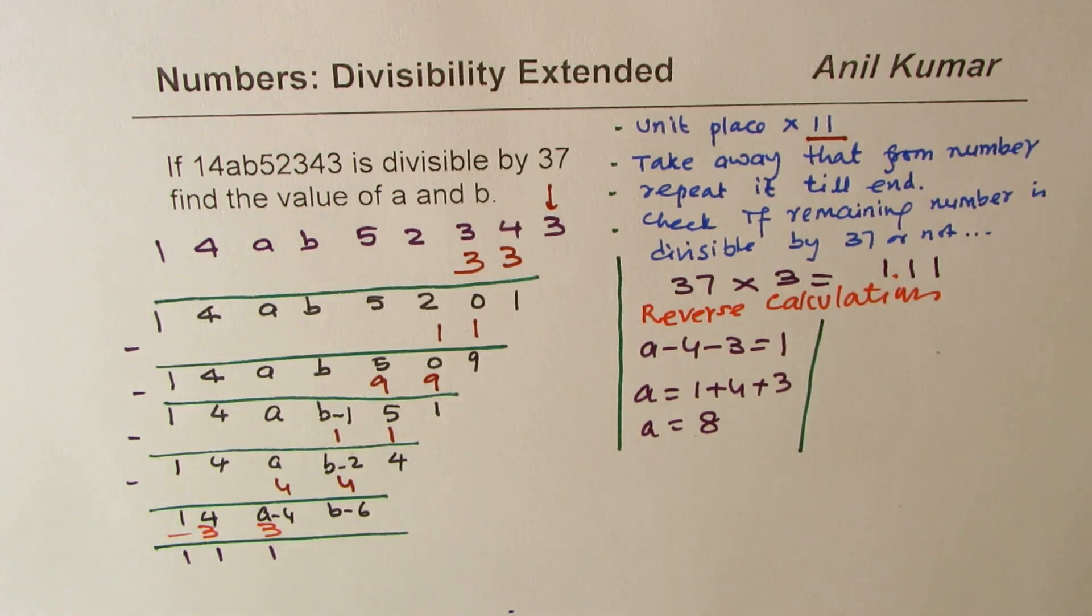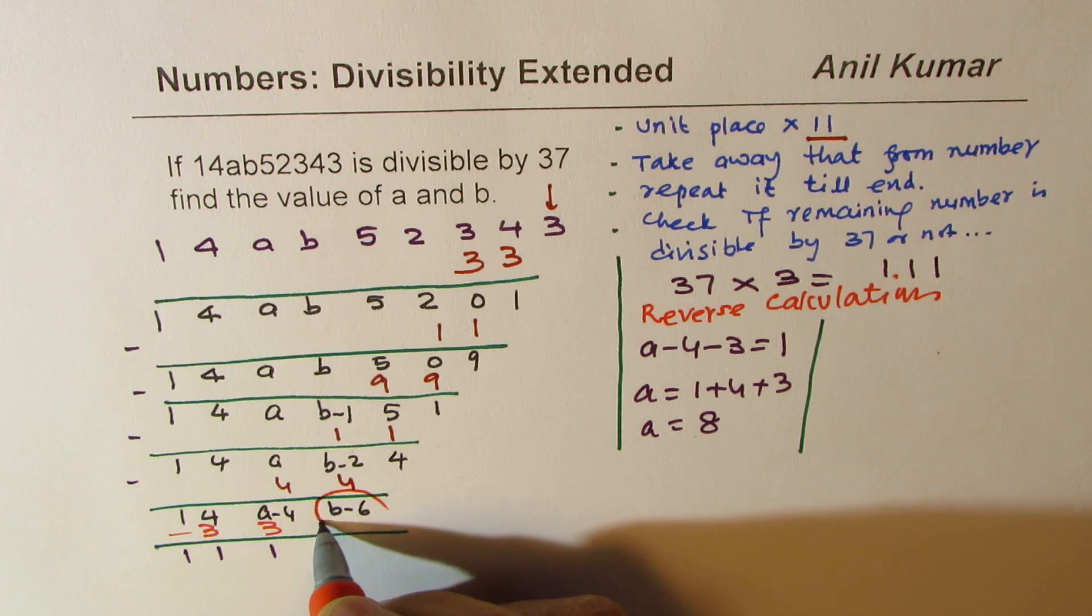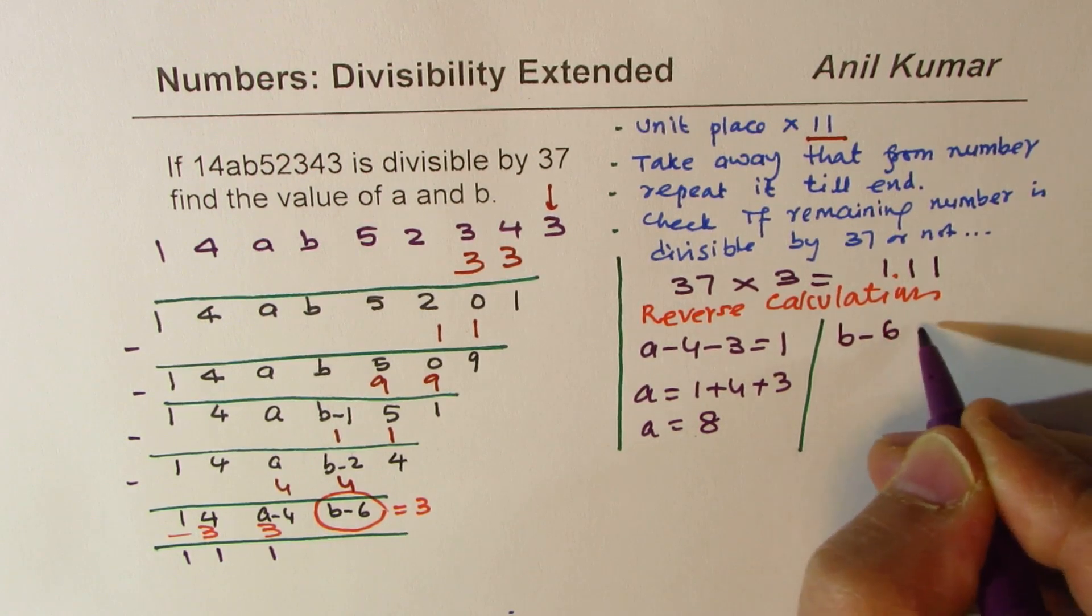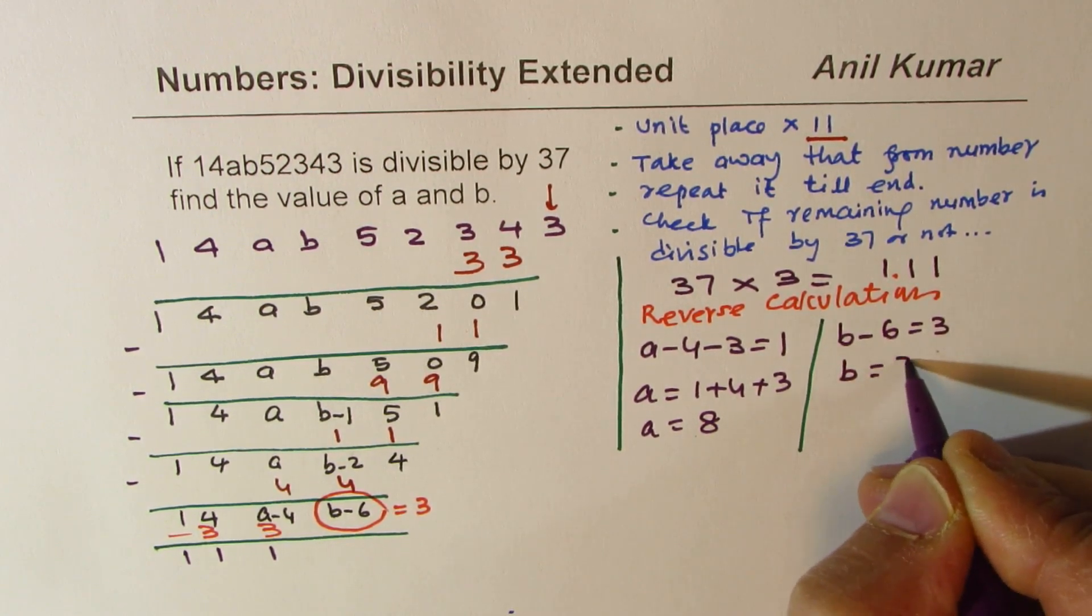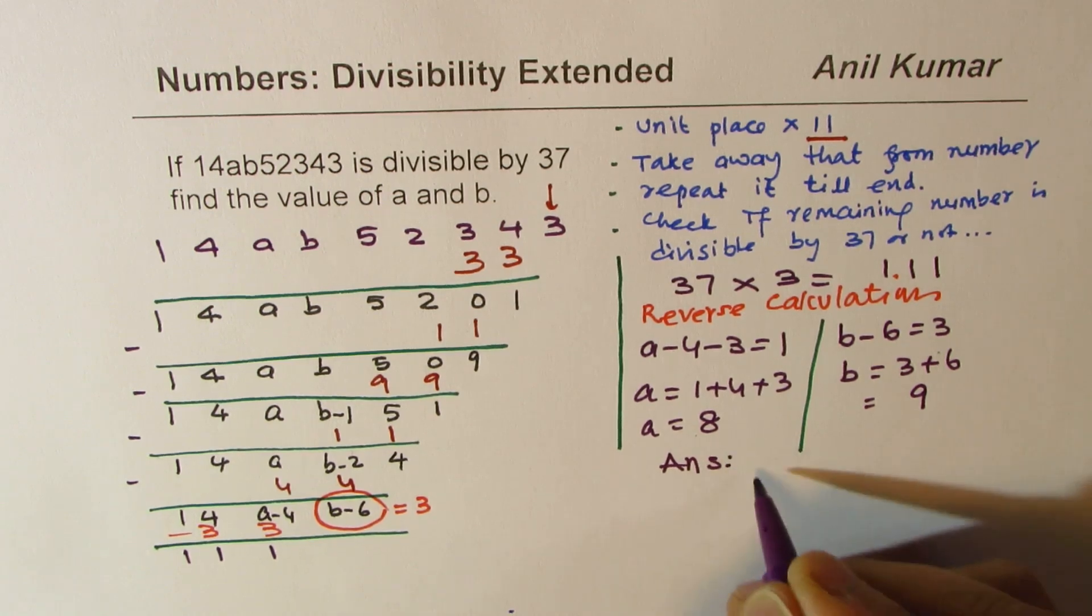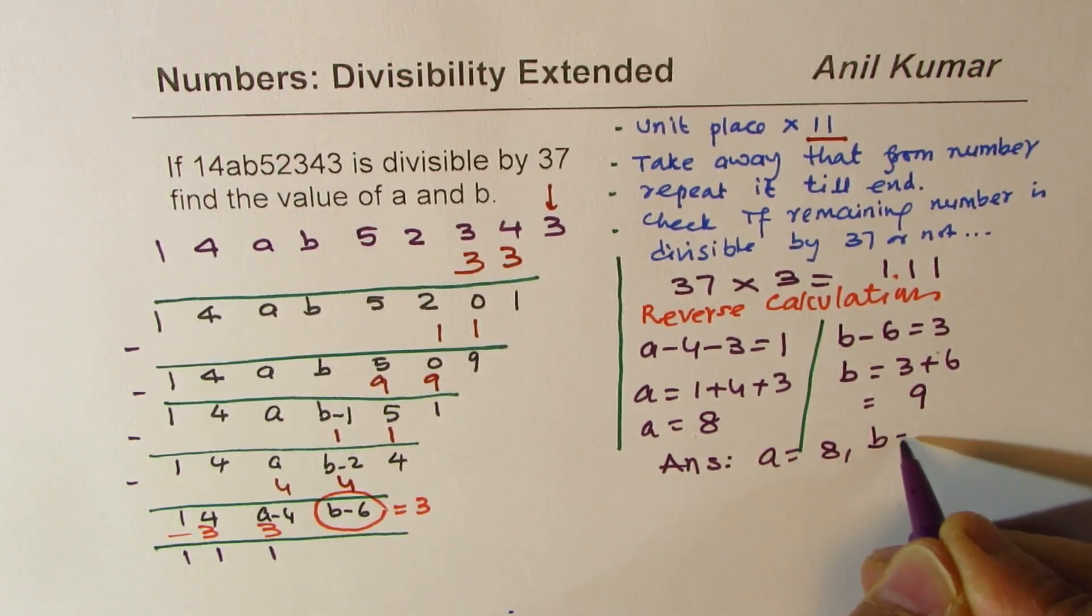So that means we get the value of A as A minus 4 minus 3 should be equal to 1. So A should be equal to 1 plus 4 plus 3, which is 8. So we get one value at least. How do you get B? Well, why should I multiply with some number and get 33? Well, the rule is that this is possible only if this number here is also equal to 3. 3 times 11 is 33. So that is the rule. So that means that B minus 6 should be equal to 3, and B should be equal to 3 plus 6, which is 9.